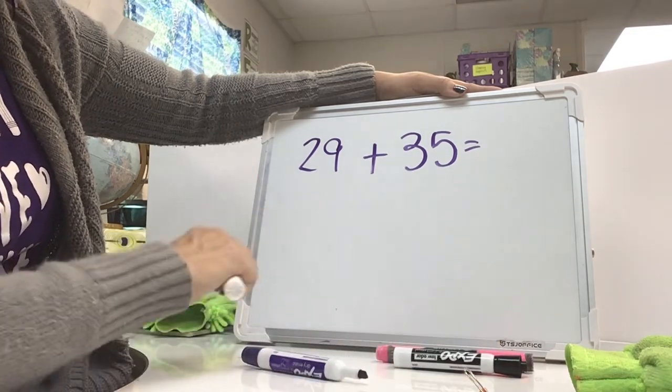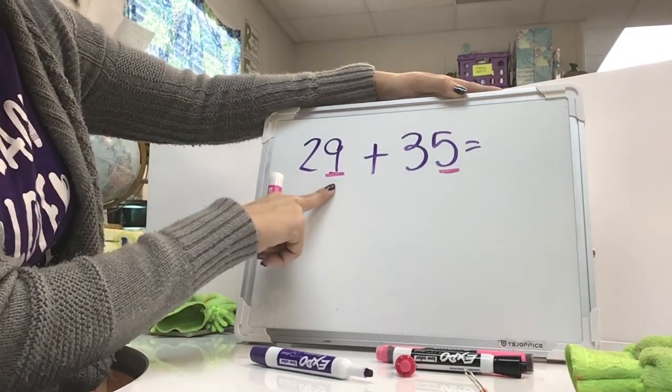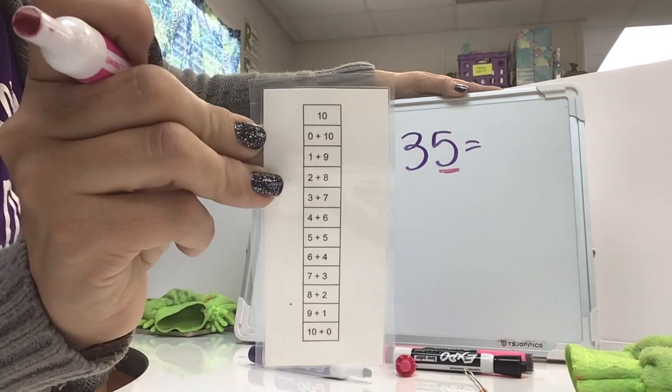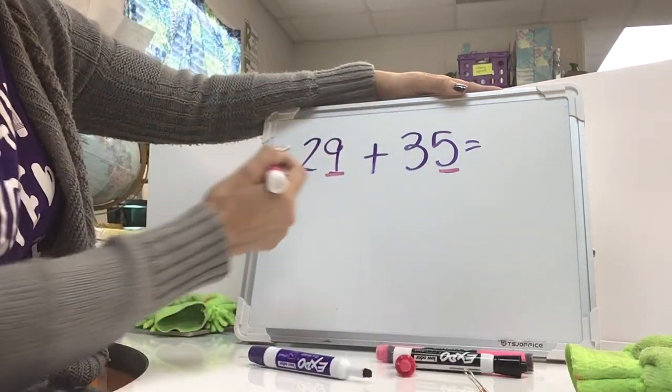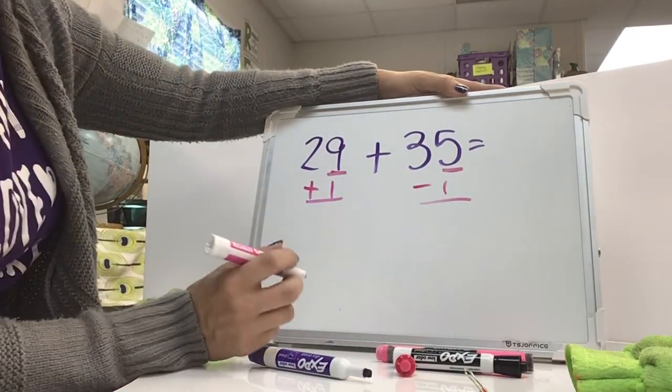When I'm doing compensation, I try to look at the ones place. 9 is much closer to 10. 9 partner pairs with 1 to get me to the next 10. So I'm going to add 1 on this side and I will subtract 1 from the other side.